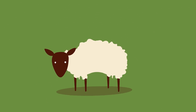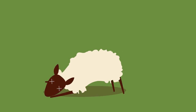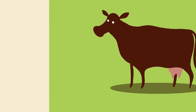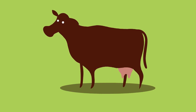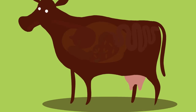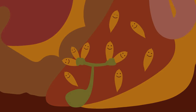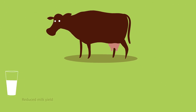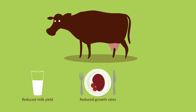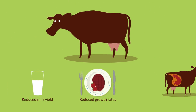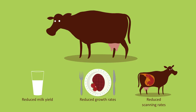Immature fluke can cause a lot of damage, especially in sheep, and can be fatal. A buildup of adult fluke in the bile ducts also causes problems, and can result in reduced weight gain, reduced milk yield in dairy animals, reduced growth rates, and reduced scanning rates in breeding animals.